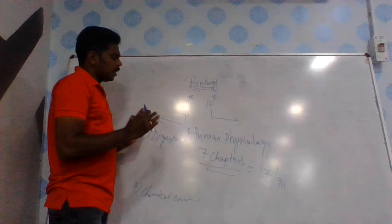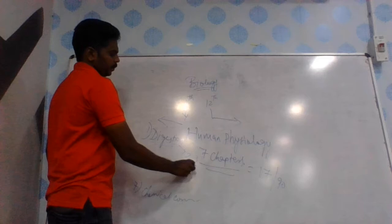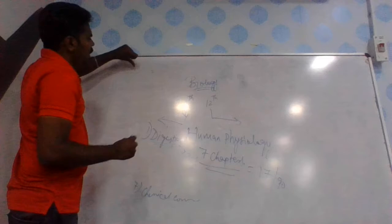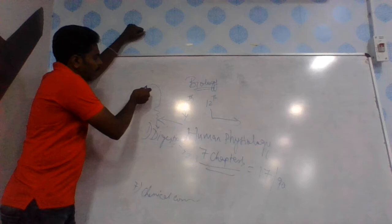In the 17 questions, the first chapter is Digestion and Absorption - 2 to 3 questions. Listen carefully. Digestion and Absorption, simple one line: starts from Elementary Canal and ends with anus.